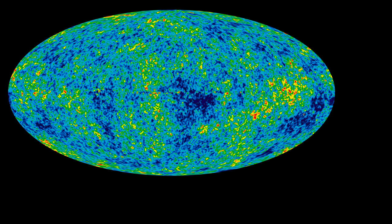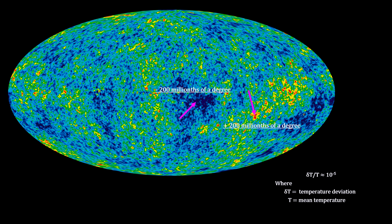The image uses color to show variations from the average, with blue for minus 200 millionths of a degree through green and yellow to red, which represents plus 200 millionths of a degree.